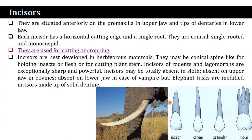Incisors may be totally absent in sloths. They are absent on the upper jaw in bovines, and also absent in the lower jaw in the case of the vampire bat. Elephant tusks are modified incisors and are made up of solid dentine.